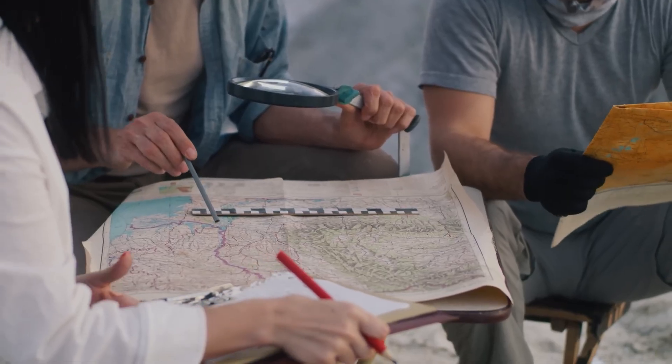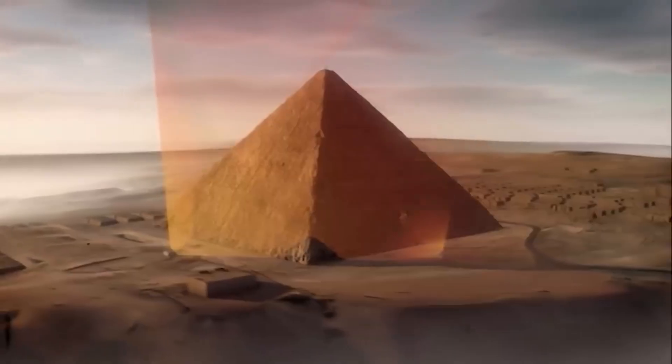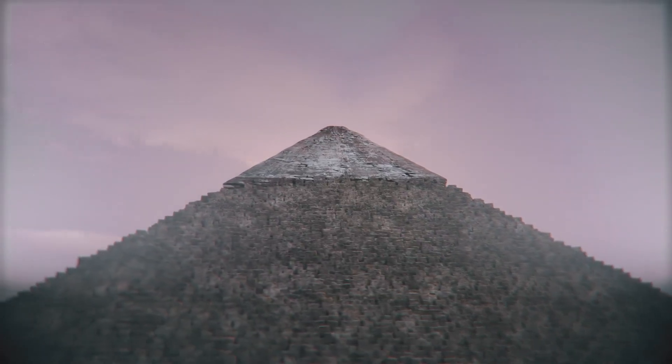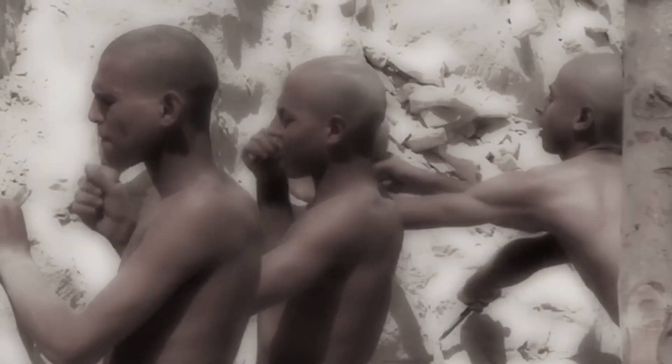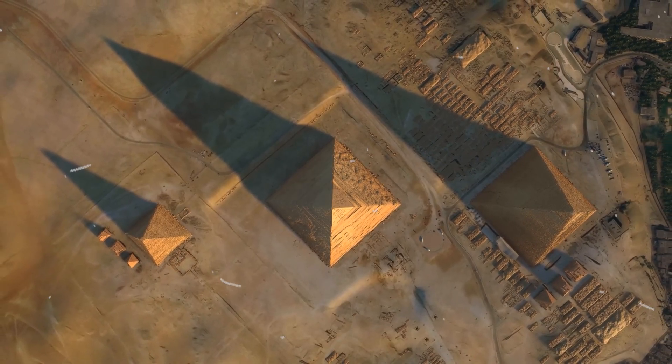The pyramid's design was not random either. It was aligned almost perfectly with the cardinal points north, south, east, and west. This shows that the builders had a good understanding of astronomy. They may have used the stars or the sun's shadow to guide the placement.